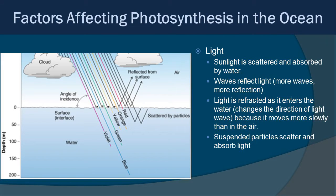Why doesn't light get very deep? There are a couple of reasons. First, light is scattered and absorbed by the water. Waves can reflect the light at the surface, and the more waves, the more reflection you get. Light is also refracted as it enters the water — there's a change in direction because light moves slower in water compared to air since water is more viscous. There are also suspended particles in the water that can absorb and scatter the light. So it's only those shorter wavelength lights that make it deeper, but even they get filtered out eventually.